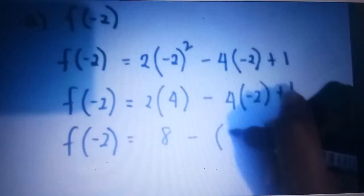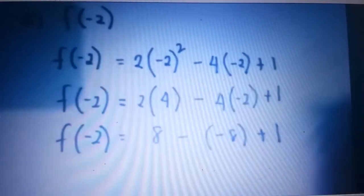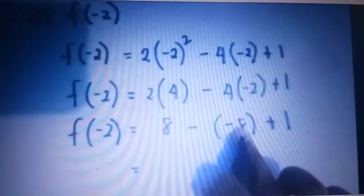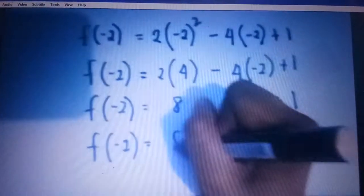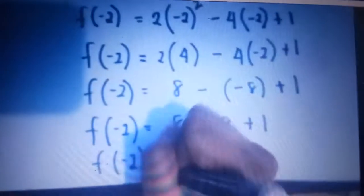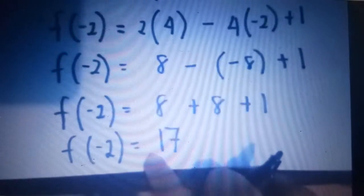We have 2 times 4 is 8, minus 4 times negative 2 is negative 8, plus 1. Then F of negative 2: negative times negative becomes positive 8 plus 1. Then we add: F of negative 2 is equal to 8 plus 8 plus 1, which is equal to 17. So we have the function F of X is equal to 2X squared minus 4X plus 1, and F of negative 2 is equal to 17.